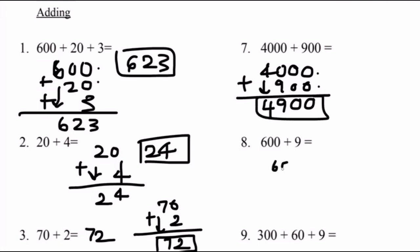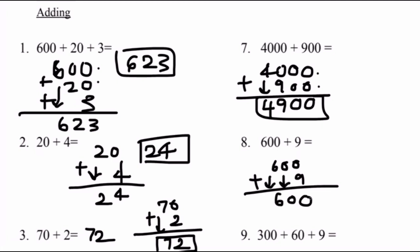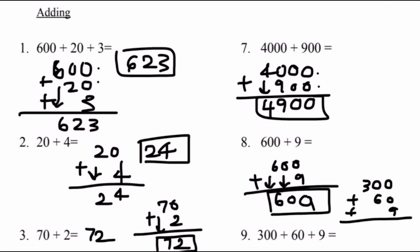Number eight: 600 plus 9. Align the numbers vertically. 9 plus 0 equals 9. We bring down to 0 and we bring down to 6. Our total is 609. Last but not least, we have number nine: 300 plus 60 plus 9. We first align the numbers vertically. 9 plus 0 plus 0 equals 9. 6 plus 0 equals 6. And we bring down to 3. 300 plus 60 plus 9 equals a total of 369.